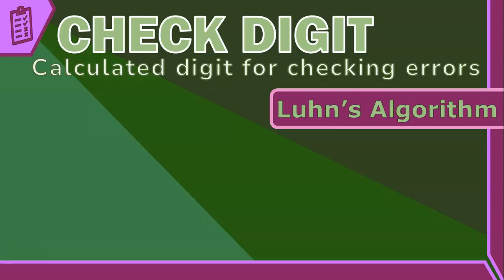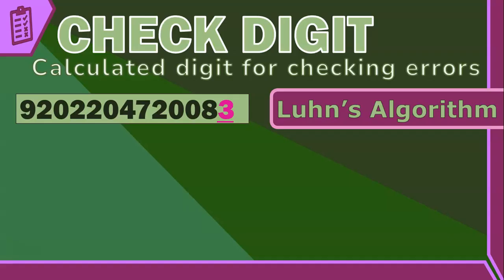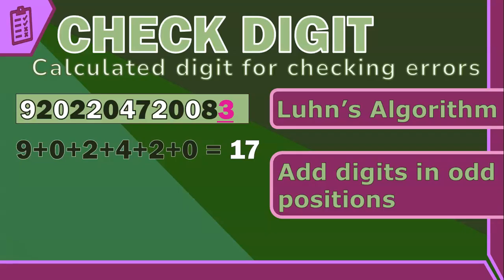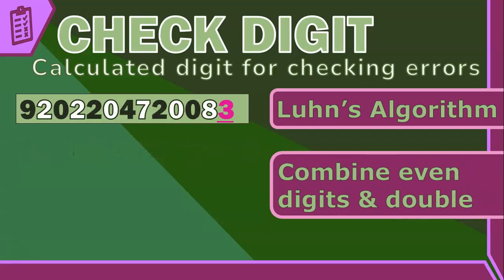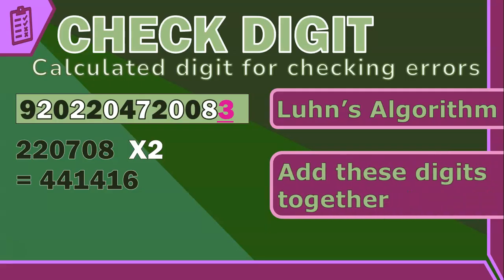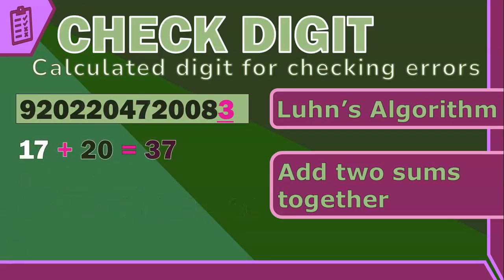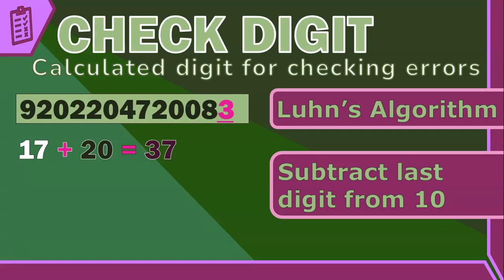Let's take a South African ID number — 13 digits — where the last digit (3) is calculated from the first 12. First, add all digits in odd positions (excluding the check digit) to get a total — in this case 17. Then take all the even-position digits, combine them as one number, multiply by two, then add the individual digits of the result — giving 20 in this case. Add the two sums (20 + 17 = 37), then subtract the second character of that sum from 10: 10 − 7 = 3. This result should equal the 13th character (the check digit), confirming a valid ID number.